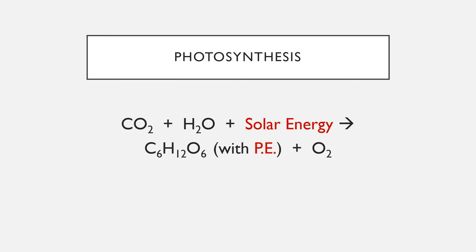Here's the equation for photosynthesis — most of you already know it. Plants take in carbon dioxide and water, pull in energy from the sun, and that energy gets stored as potential energy in glucose (C₆H₁₂O₆), with a release of oxygen. The rate at which they're doing photosynthesis and storing that energy in glucose — that's primary productivity.